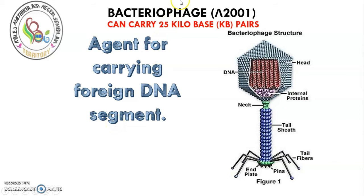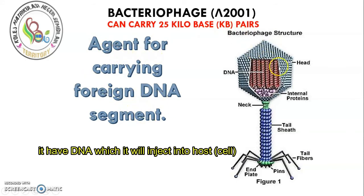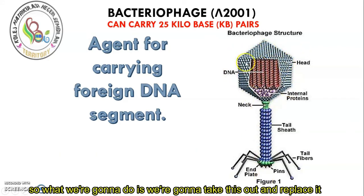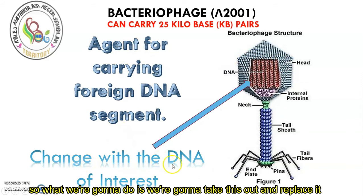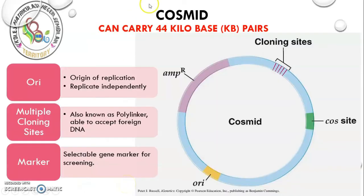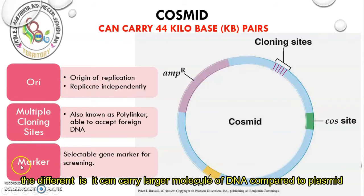The next vector is the bacteriophage — for example, lambda 2001. It can carry bigger DNA molecules, around 25 kilobases. It is an agent for carrying foreign DNA segments. It has DNA which it injects into the host. What we do is take out the phage DNA and replace it with the DNA of interest. The cosmid can carry 44 kilobases and it has an origin of replication, multiple cloning site, and marker. The difference is it can carry larger molecules of DNA compared to plasmid.